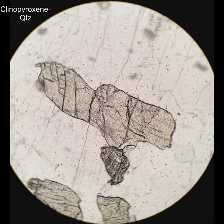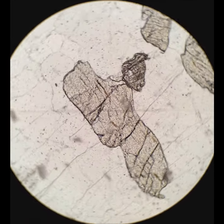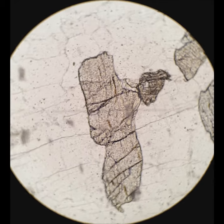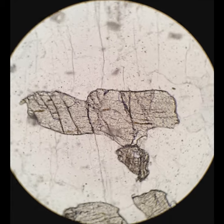Now, this is clinopyroxene with the C-axis running parallel to the plane of the thin section. So these are going to be the highest-order interference colors. But you can also see it still has high-relief compared to the quartz around it.